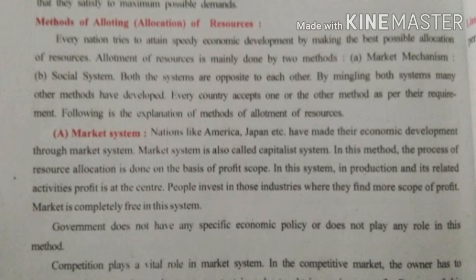In this system, profit is the most important thing. The process of distribution of resources is done on the basis of profit. The system is profit-oriented. In production and its related activities, profit is at the center. So the main aim of this system is profit. People invest in those industries where they find more scope of profit.